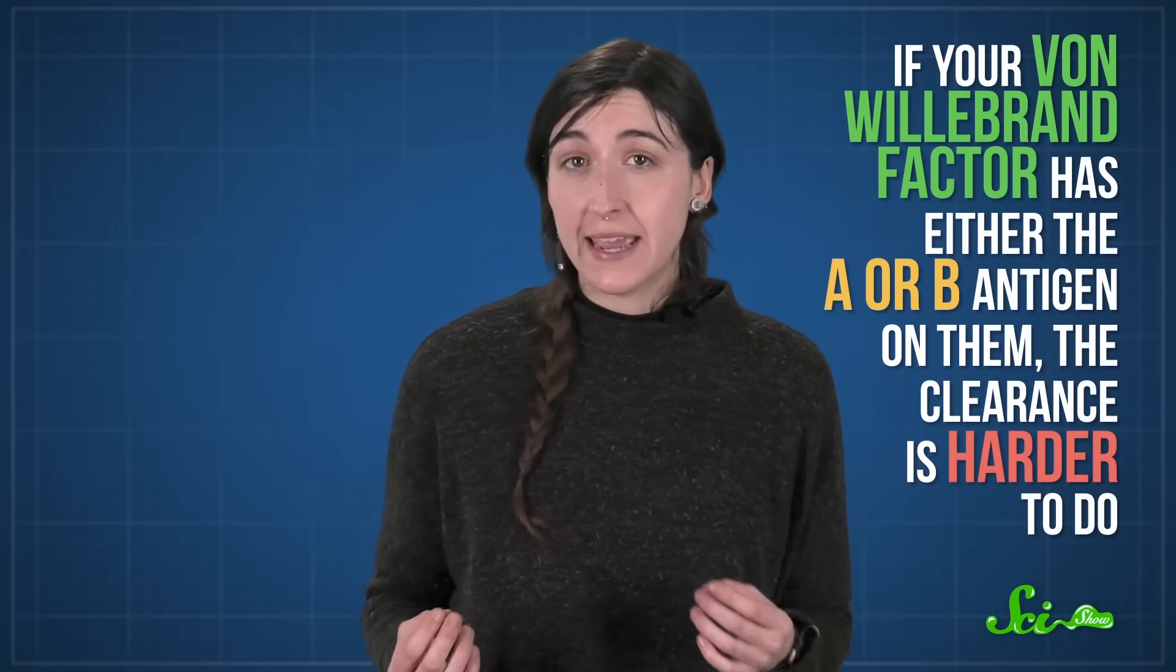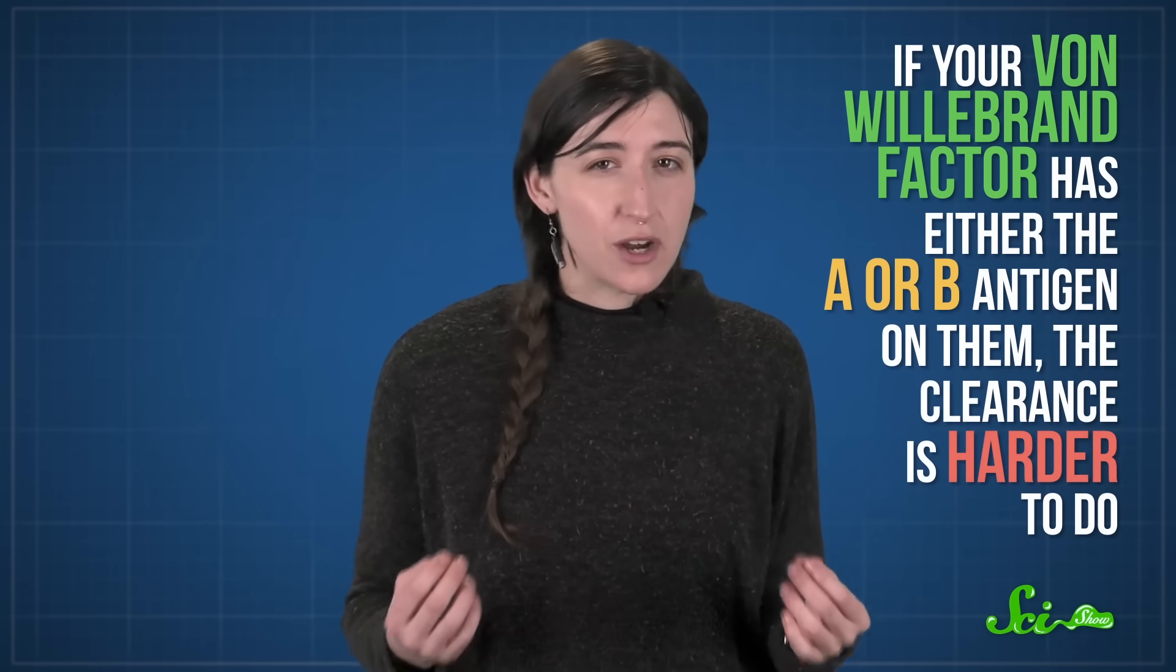Thankfully, your body routinely sweeps out some of this factor. Scientists haven't quite figured it out yet, but for some reason, if your von Willebrand factor has either the A or B antigen on them, the clearance is harder to do.